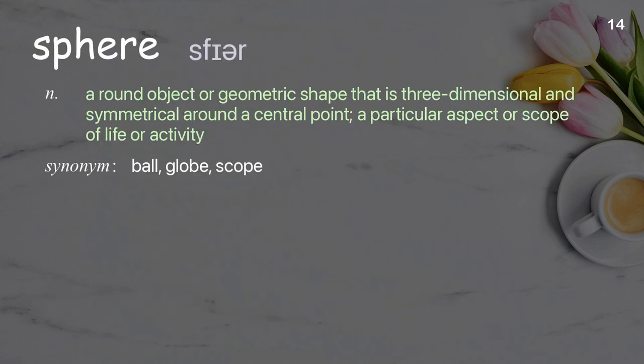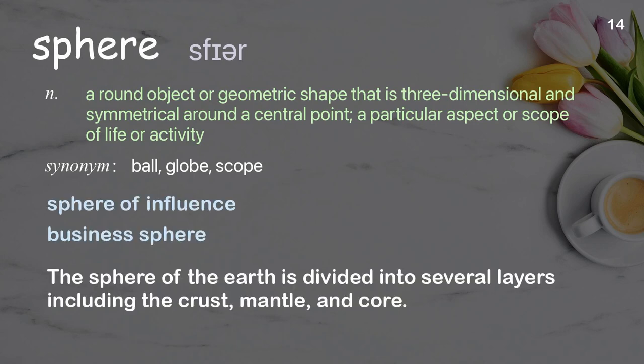Sphere: a round, three-dimensional, symmetrical geometric shape around a central point; a particular aspect or scope of life or activity. Examples: sphere of influence, business sphere. The sphere of the earth is divided into several layers, including the crust, mantle, and core.